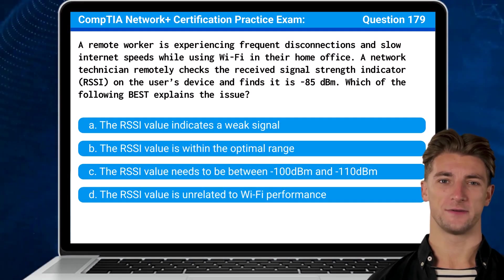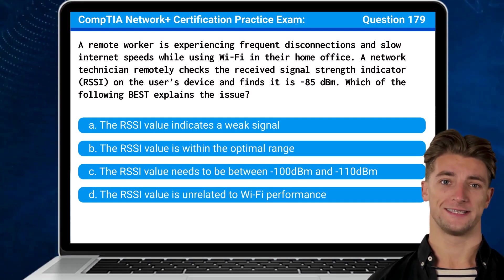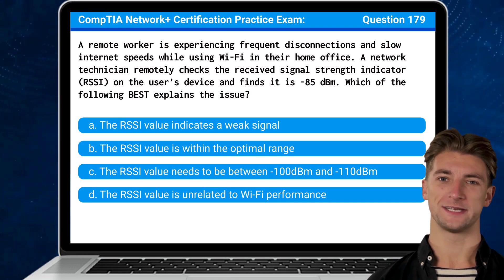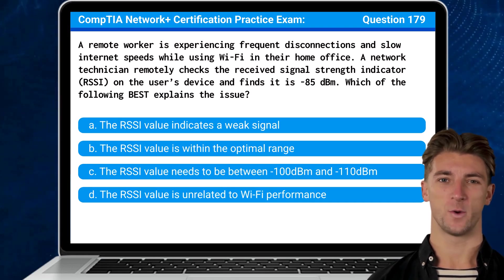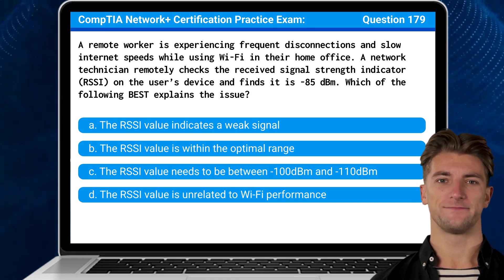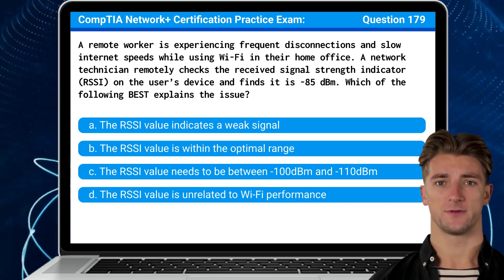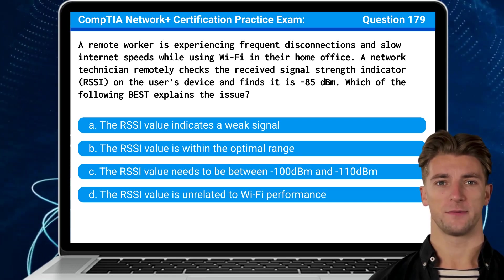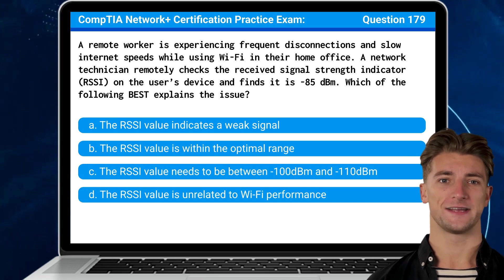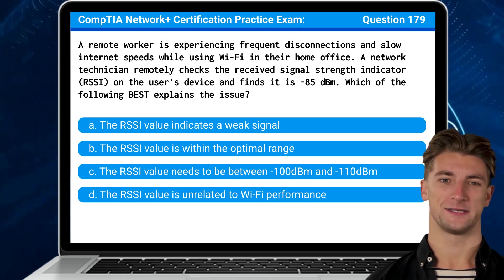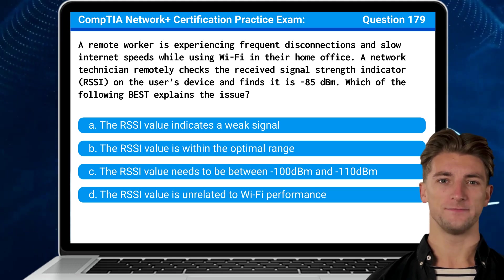Question 179. A remote worker is experiencing frequent disconnections and slow internet speeds while using Wi-Fi in their home office. A network technician remotely checks the received signal strength indicator on the user's device and finds it is negative 85 decibel milliwatts. Which of the following best explains the issue?